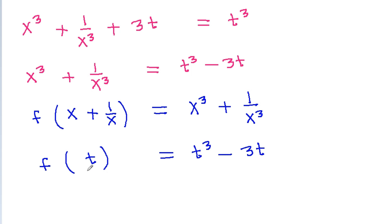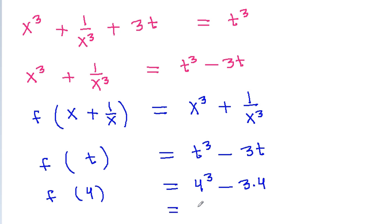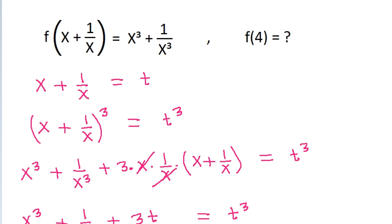And if we put t = 4, then f(4) will be equal to 4³ minus 3 times 4, which is 64 minus 12, that will be 52. So f(4) is 52.